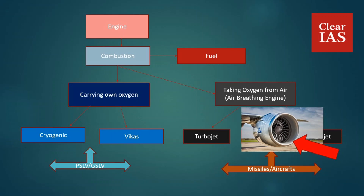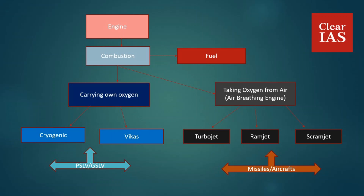Engines that use these turbines are called turbojet engines — they use turbines or blades and take oxygen from the atmosphere. Latest technology allows you to compress air without turbines, using shock waves. The disadvantage of having turbines is that they are heavy, and that weight is added to the flight. When there is no blade or turbine, that weight is saved and efficiency is increased. Engines without turbines or blades are called ramjet and scramjet.